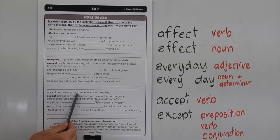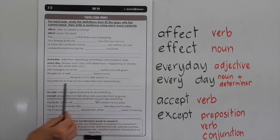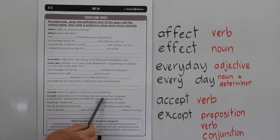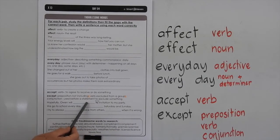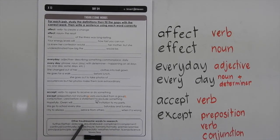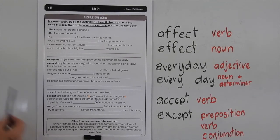'Accept' is a verb — it means to agree to receive or do something. Whereas 'except' could be a preposition meaning 'not including', a verb meaning 'excluded from a group', or a conjunction used before a statement to exclude something. You have to work out which one goes in which sentence — for example, 'hopefully Owen will something the invitation to my party'. Don't forget to write your own interesting sentence at the bottom. We've given you some other pairs of words that are troublesome, so you could discuss them within your group or class. It is important that you know when to use each of them.